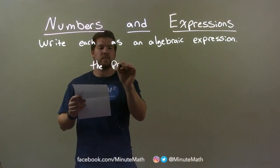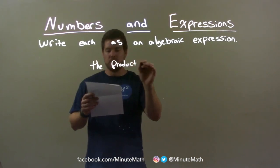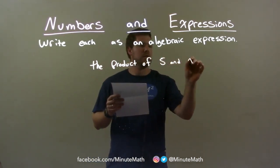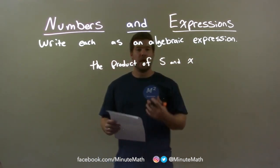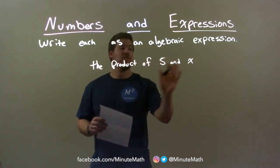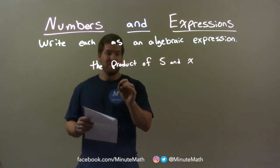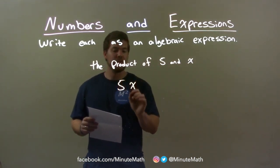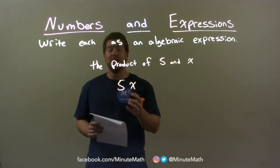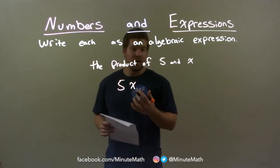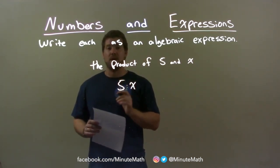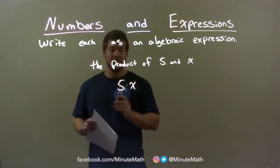The product of 5 and x. So we have the product of 5 and x. Product means multiplication, so we're going to multiply 5 and x. We just write 5 and x — we know a constant next to a variable always implies multiplication, so we don't need to put the dot there. But you can see it's the same thing as having that multiplication sign. That's the final answer.